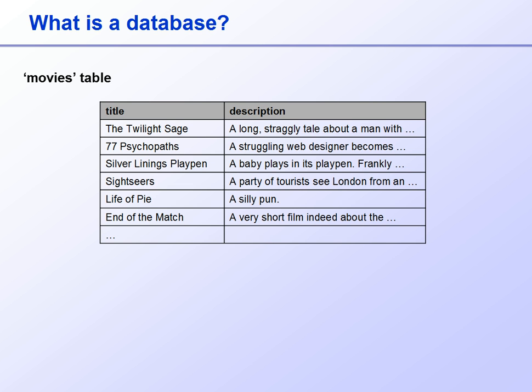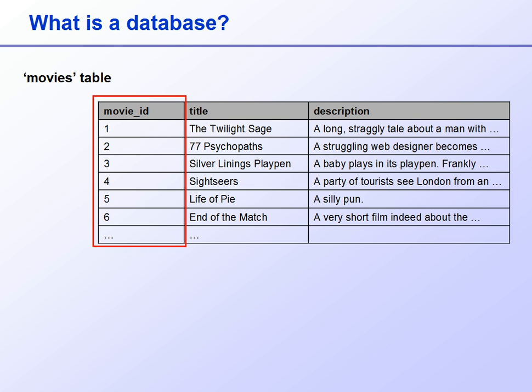Looking at our Favourite Movies project, each record in the Movies table will consist of a single movie's title and description, with the column names of the table being the names of these individual fields. We'll also want to guard against the possibility of two different movies having exactly the same title and description, perhaps because they're different releases of the same movie. We do this by including a unique identifying number, so that whatever else is the same, no two records can ever be confused.